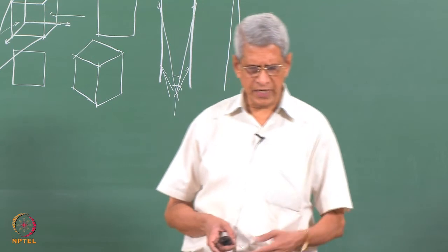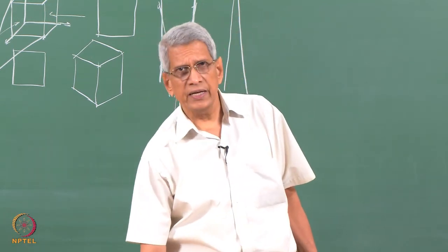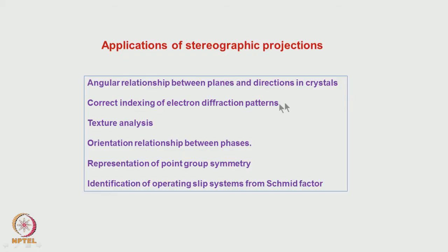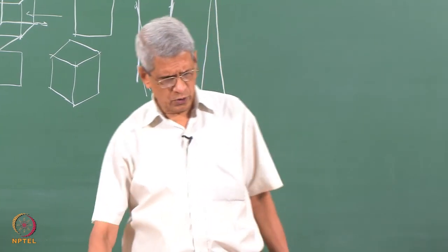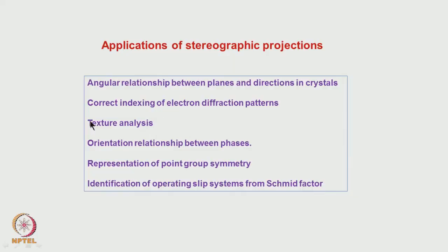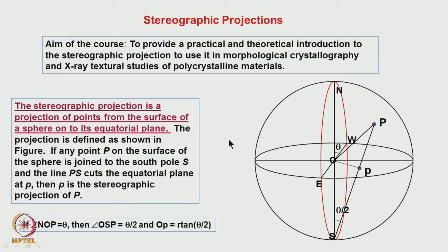Applications of stereographic projection include: measuring angular relationships between planes and directions in crystals; indexing diffraction patterns correctly; texture analysis — since deformation of materials causes preferred orientation of grains; and analysis of strengthening phases, where the orientation of phases in a matrix, their number density, distribution, and habit plane can all be obtained using stereographic analysis.